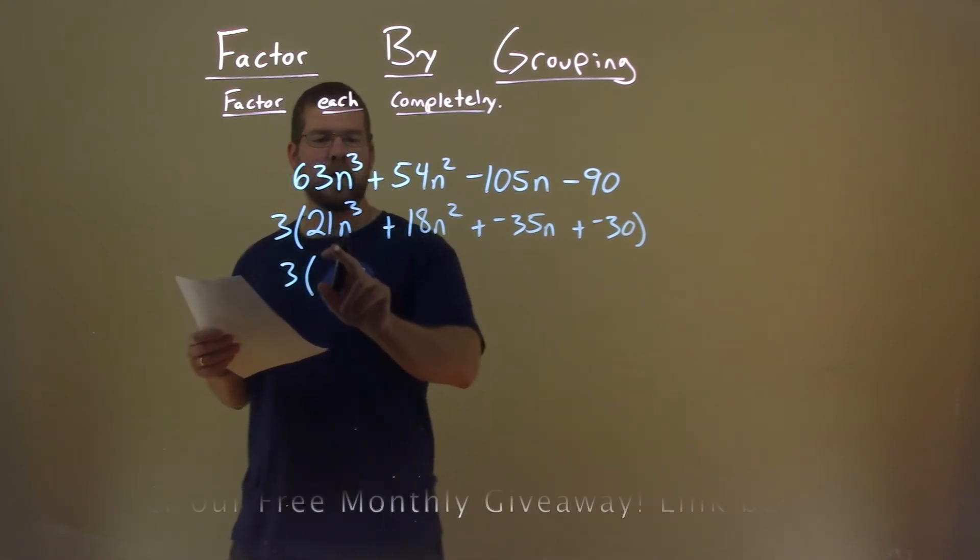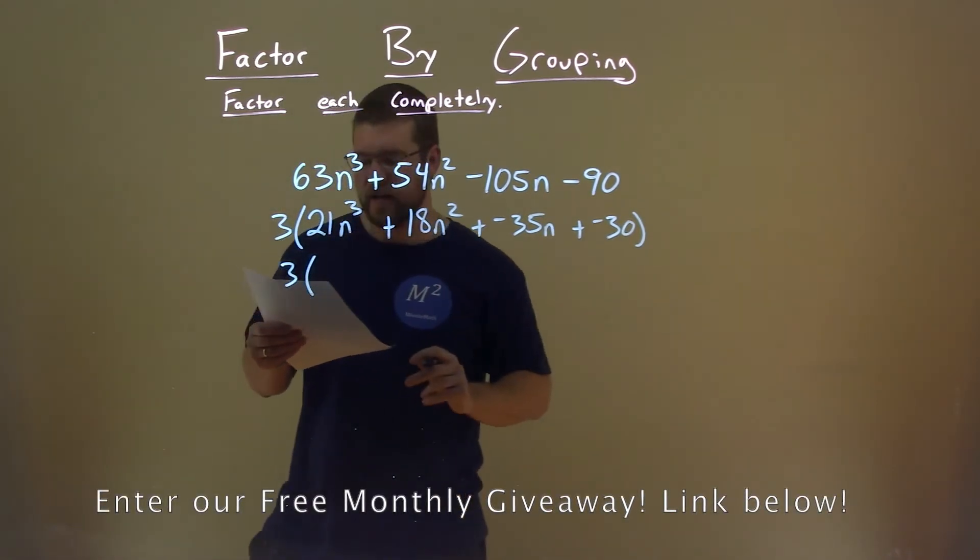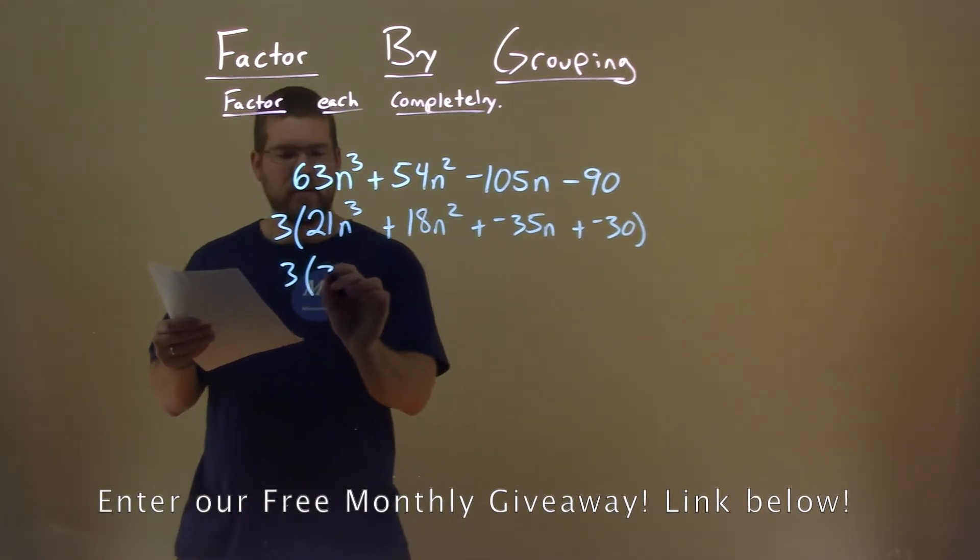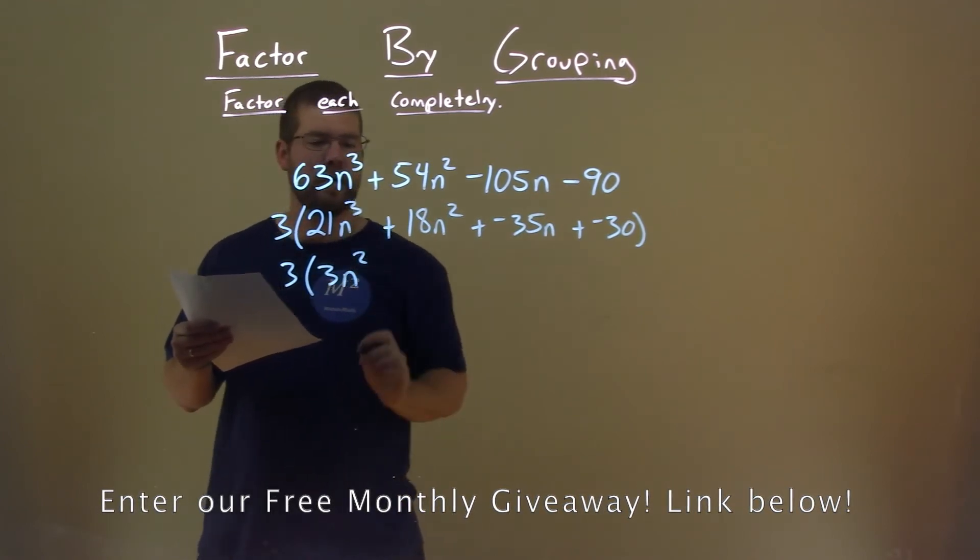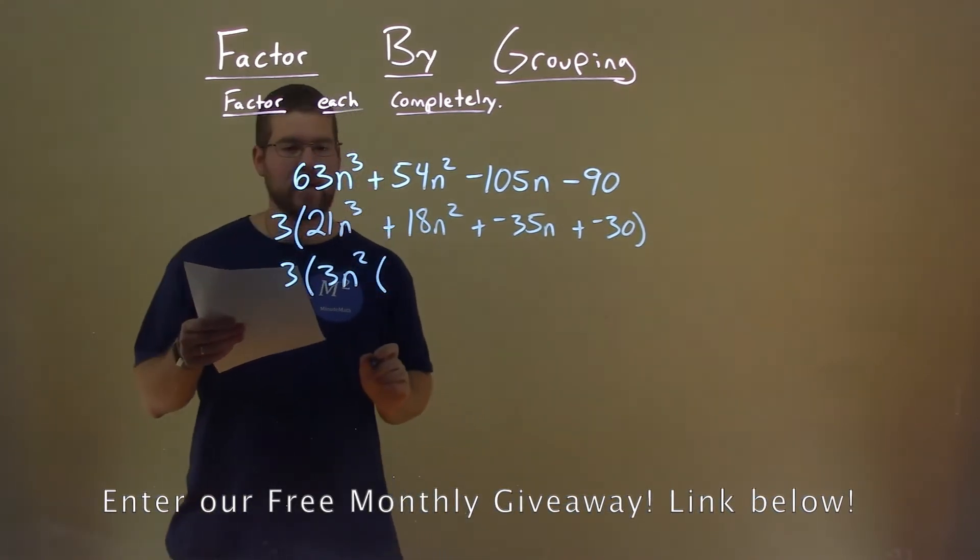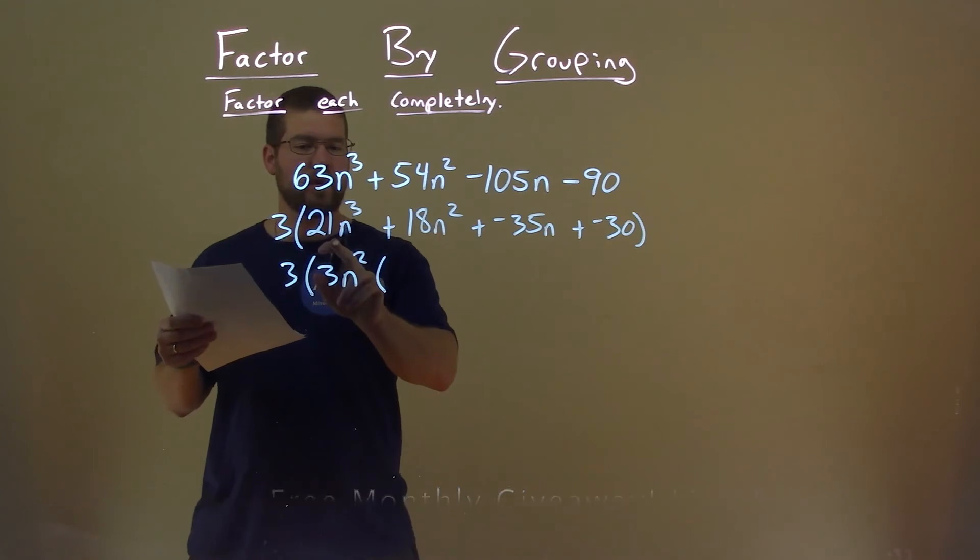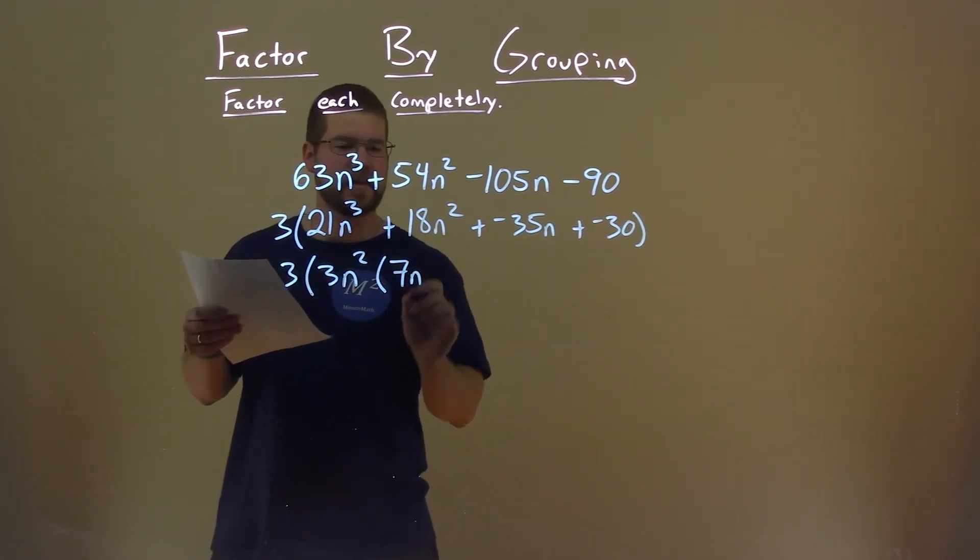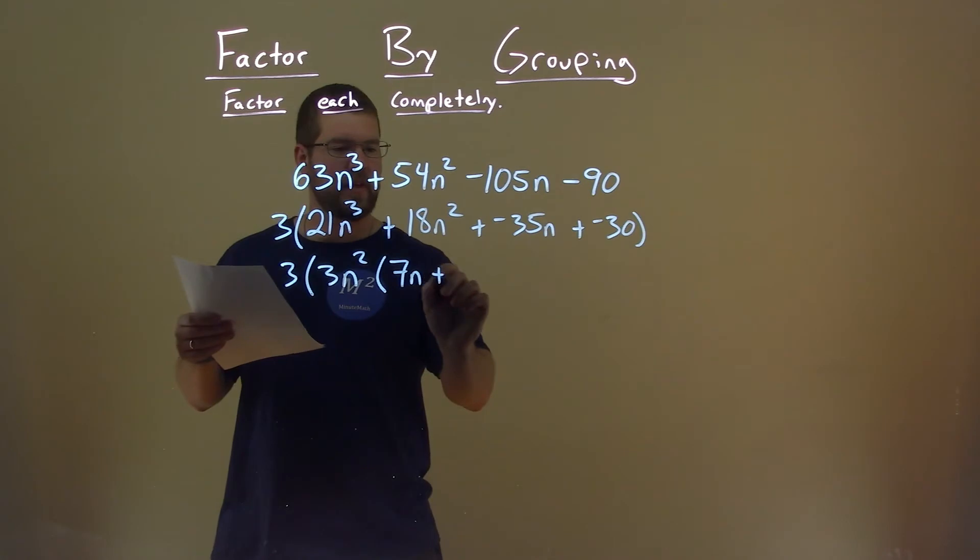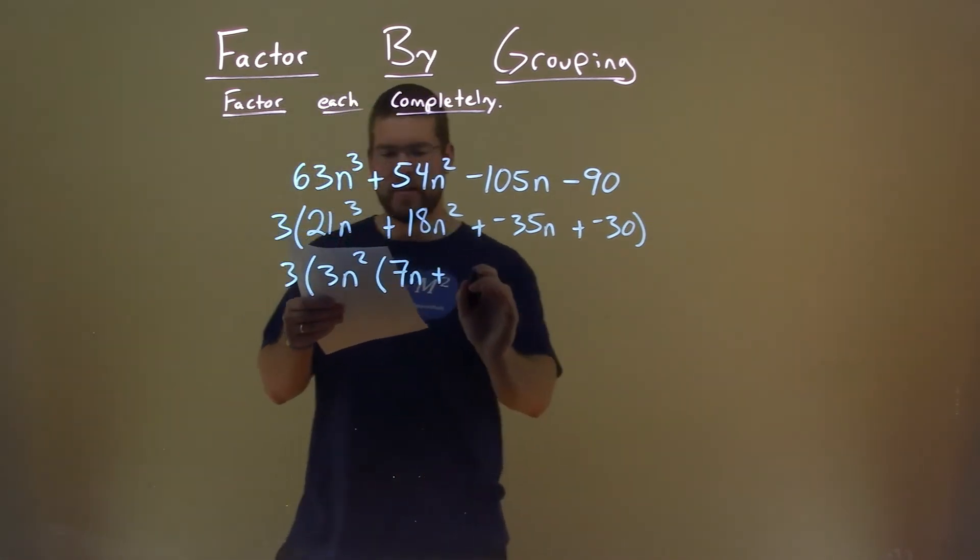We want to see, well, what goes into 21n to the third power and 18n squared? And that's actually a 3n squared goes into both. What does that leave us? Well, 3n squared goes into 21n to the third power 7n times. Same question with 18n squared, and we're left with a 6.